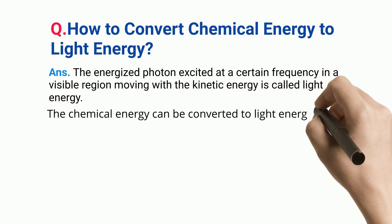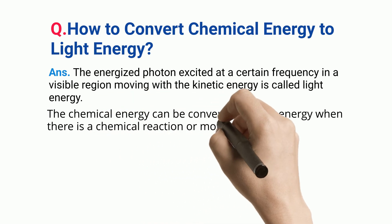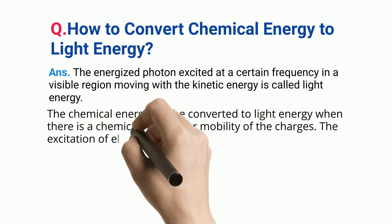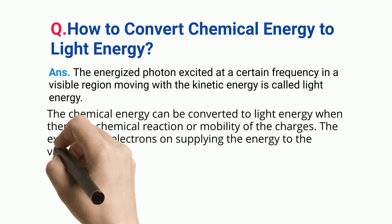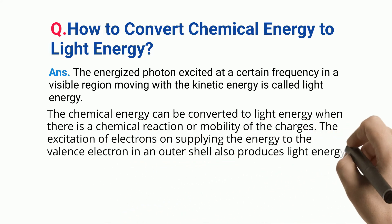The chemical energy can be converted to light energy when there is a chemical reaction or mobility of the charges. The excitation of electrons on supplying the energy to the valence electron in an outer shell also produces light energy.